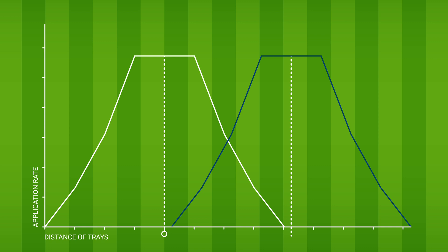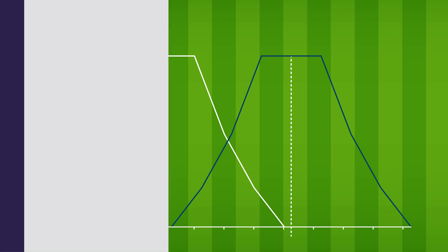The final step is to calculate the total application rate that you will achieve when using the optimal bout width. To do this, simply add up the total from the two overlapping lines on the graphs. If the total application rate achieved is not close to your target rate, you will need to adjust the metering mechanism accordingly and repeat the calibration process.